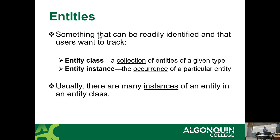Entities are things that are readily identified and that users want to track. By users, that could be a person, a company, a department — whatever. Someone wants to track certain kinds of information. We have two common terms: the entity class, which is a collection of entities of a given type, and an entity instance.